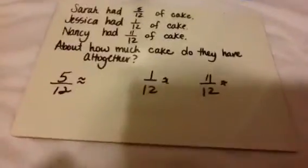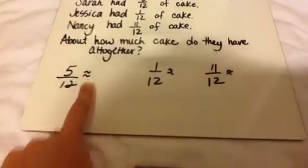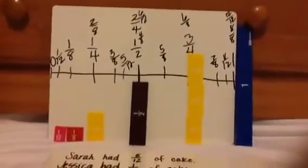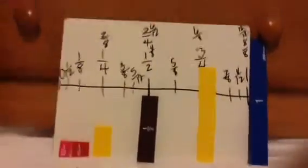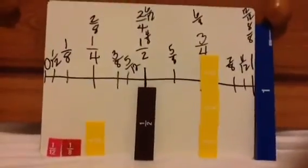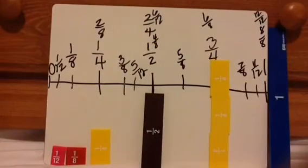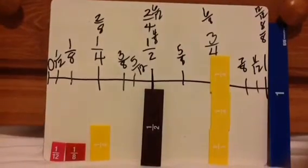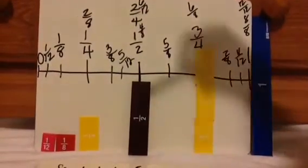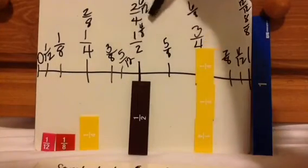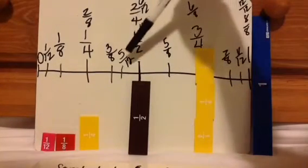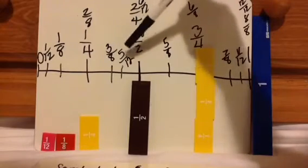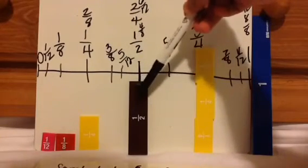Instead of an equal sign, I put a squiggly equal sign that shows estimation. Let's look at our number line. Let's find 5 twelfths, 1 twelfth, and 11 twelfths and make a determination. 5 twelfths is right over here. 6 twelfths is equivalent to 1 half, so 5 twelfths is just a little bit below that. I could say 5 twelfths is about 1 half.